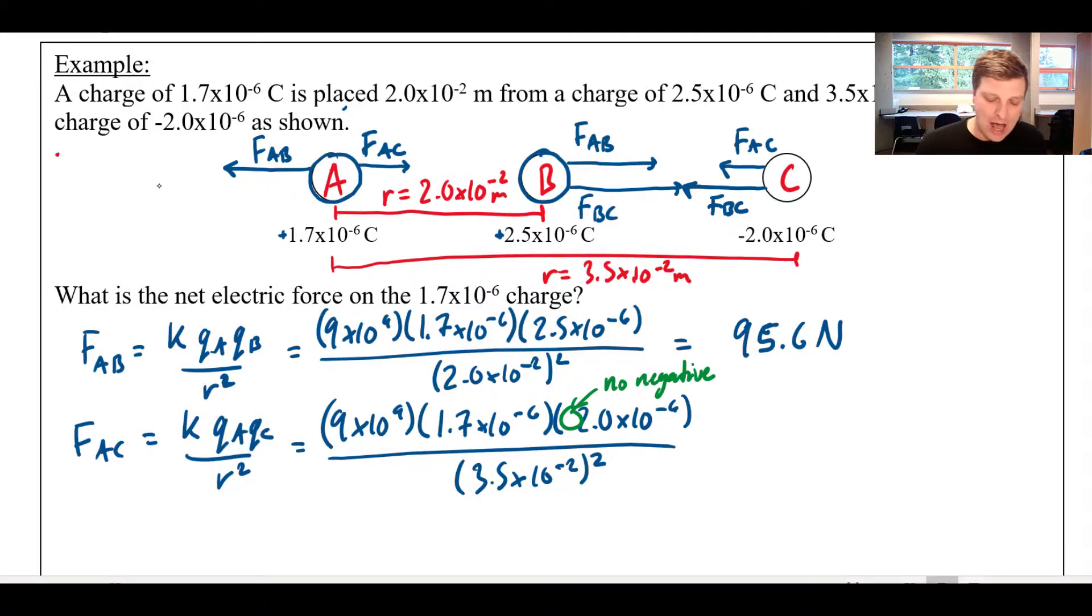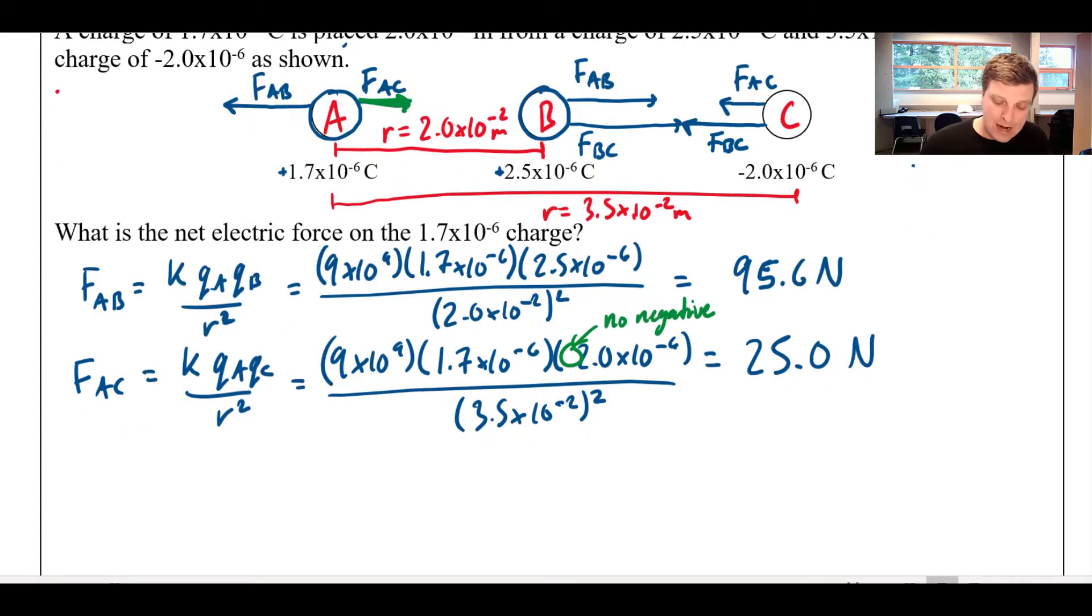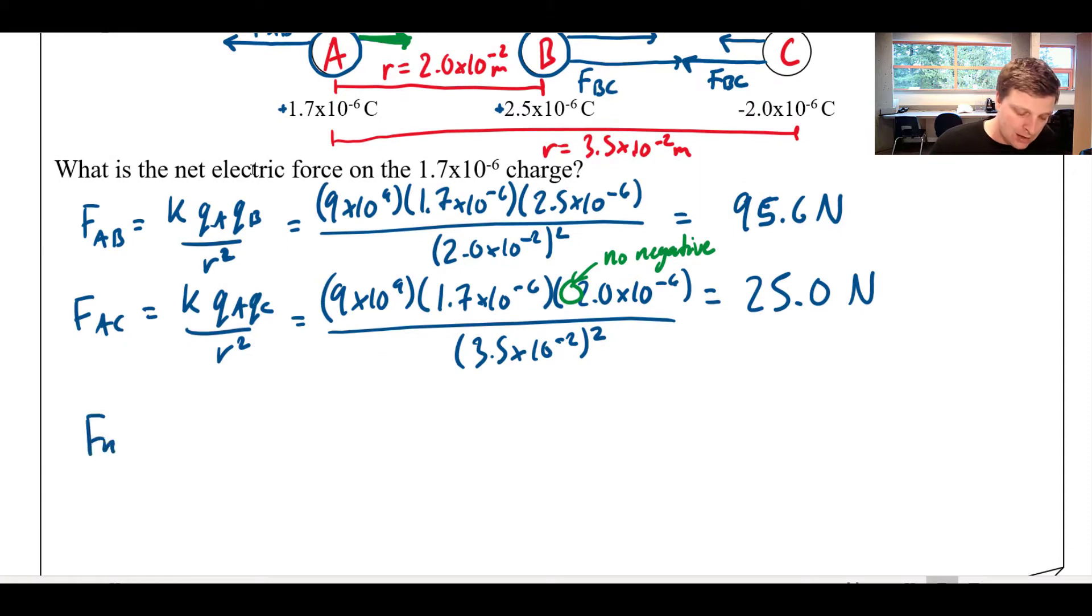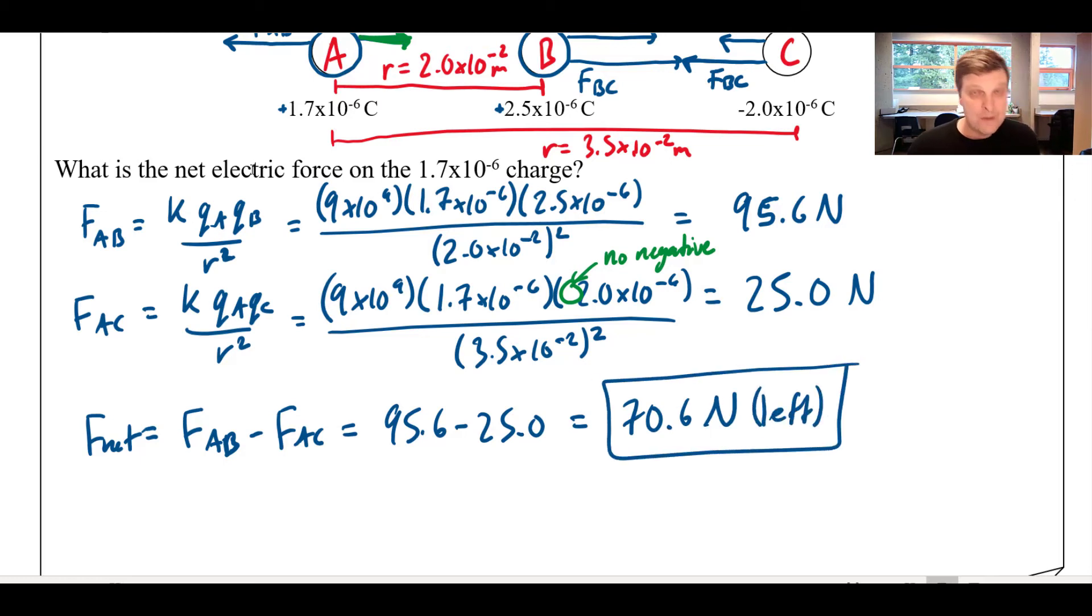So when I run these numbers here, this is really just telling me the amount of force, not the direction. So I'm not going to use negative signs in my force calculations. And when I crunch these numbers, these end up at right around 25.0 newtons. So I can see that my net force on A, F net, I'm just going to use winners minus losers. So this is like FAB minus FAC. And so that's just 95.6 minus 25.0 is 70.6 newtons. Now it might be helpful to specify that that is to the left, because that's the way it goes. And that's it.